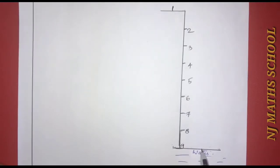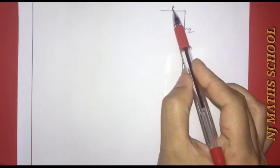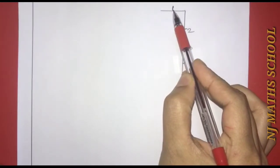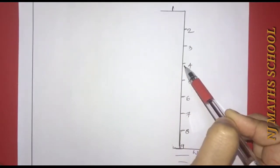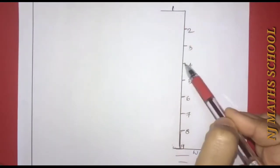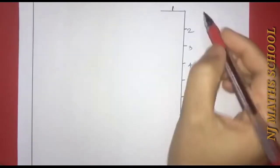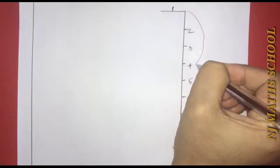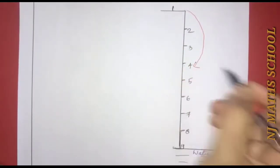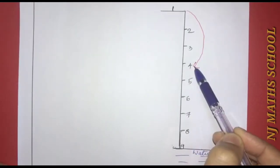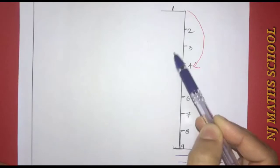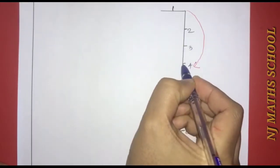The monkey jumps three steps down and then jumps back two steps up. In the first jump, the monkey goes three steps down — that is one, two, three — down to the fourth step. After three steps down, two steps up. That gives us two steps.